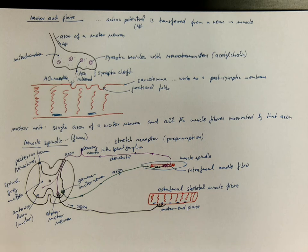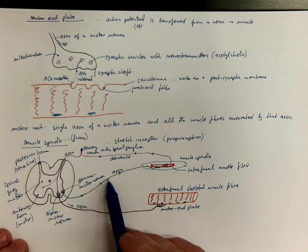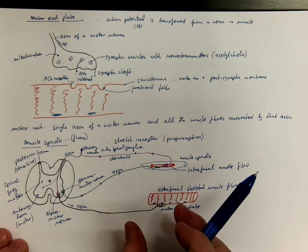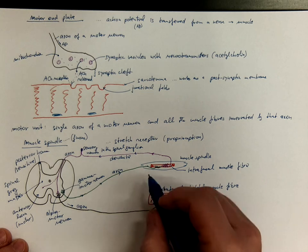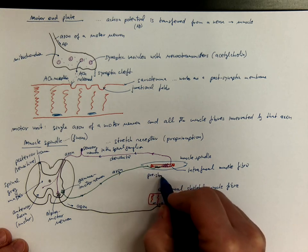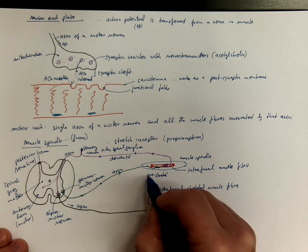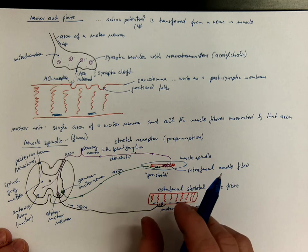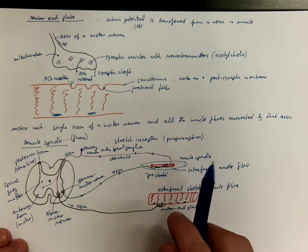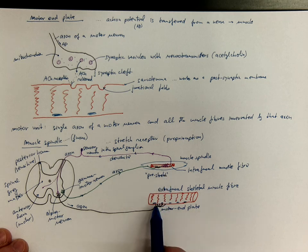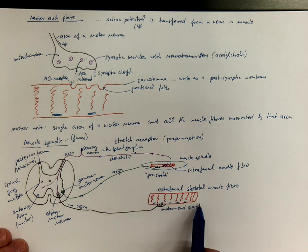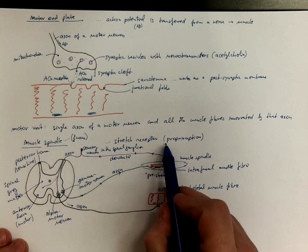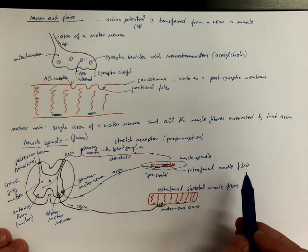So actually the gamma motor neurons are modulating the sensitivity or the pre-stretch of these intrafusal muscle fibers. They modulate their sensitivity, how sensitive they are to perceive the contraction or relaxation caused by the extrafusal muscle fibers. And the CNS is constantly being informed about that, which is an important part of a process called proprioception.